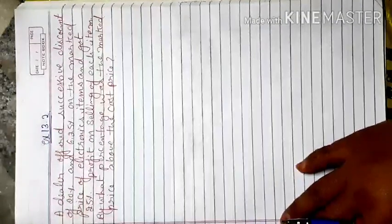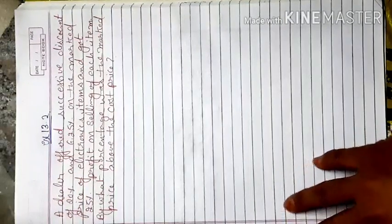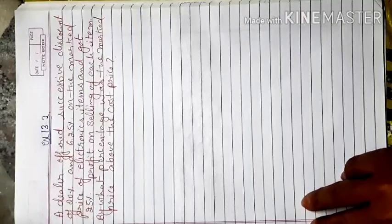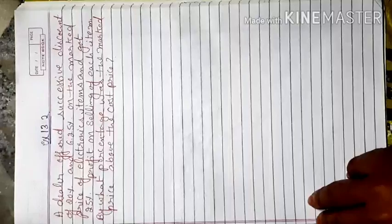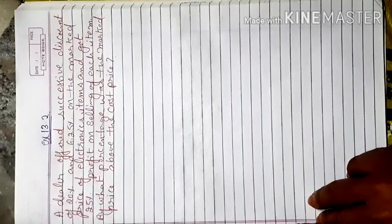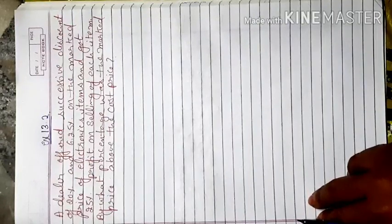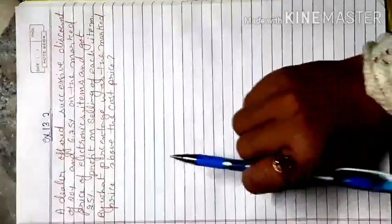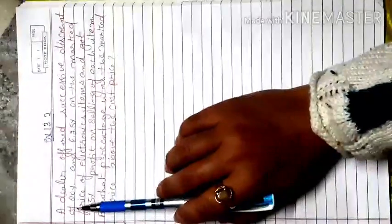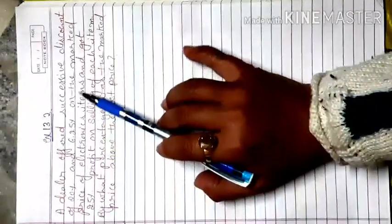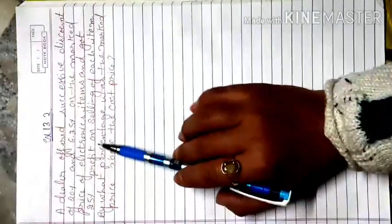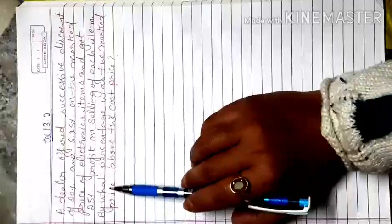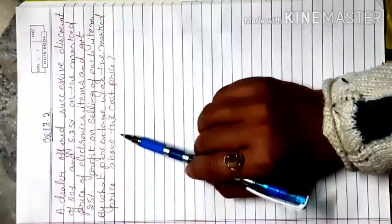Good morning everyone. Today I will discuss the fifth question of today's assignment worksheet — conceptual questions of Exercise 13.2, related to your tryout questions, example questions, and think-around questions. The fifth question is: a dealer offered successive discounts of 20% and 6.25% on the marked price of electronic items and earned 25% profit on the selling of each item. By what percent was the marked price above the cost price?